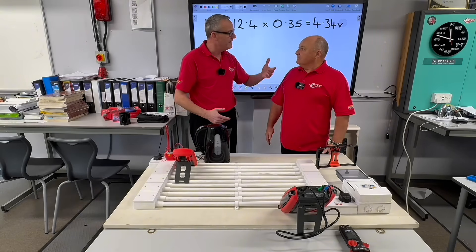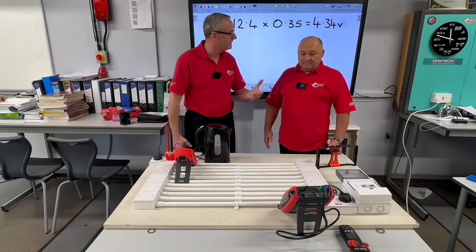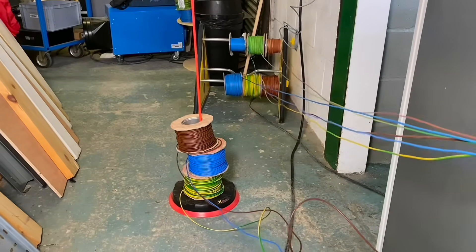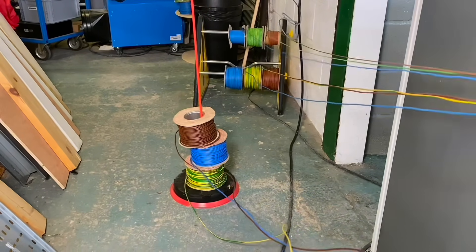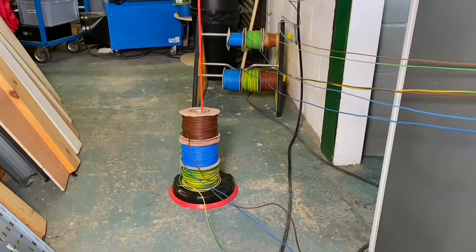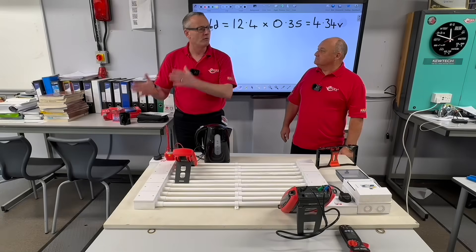So what happens if we increase the length of the circuit in relationship to volt drop? I would say it increases. Would you say it confident enough to agree with the audience? Yeah. It increases. Yeah. So we're thinking about longer circuits. How could we then reduce volt drop on a long circuit?